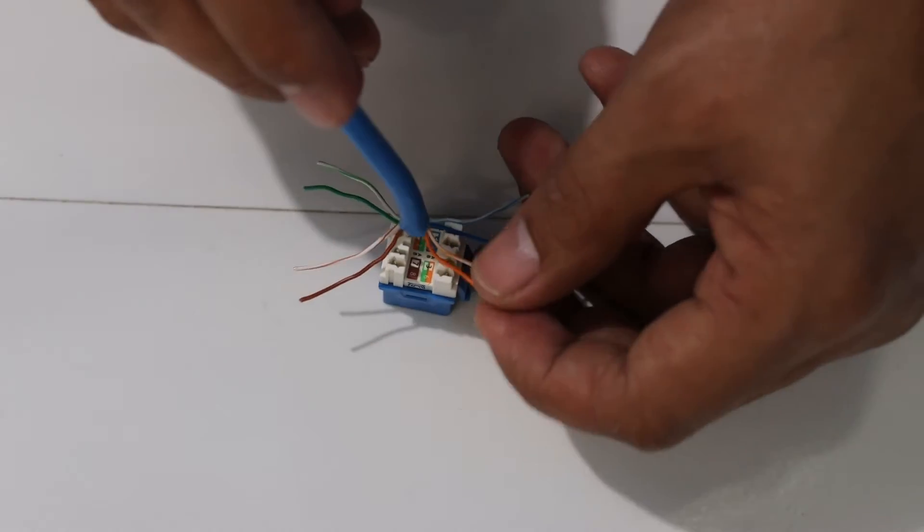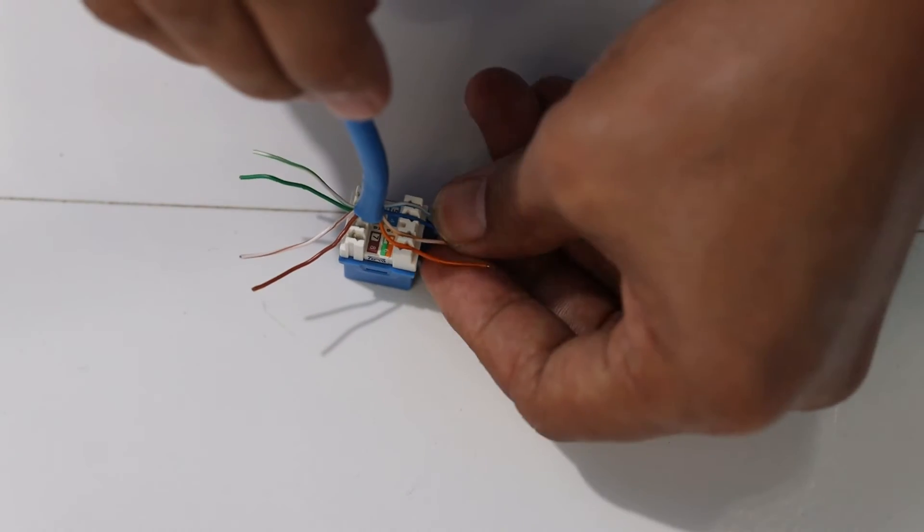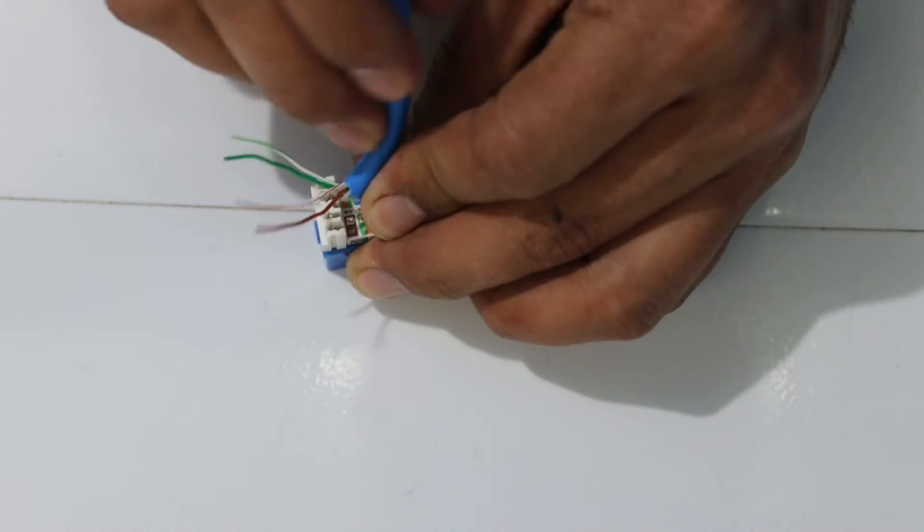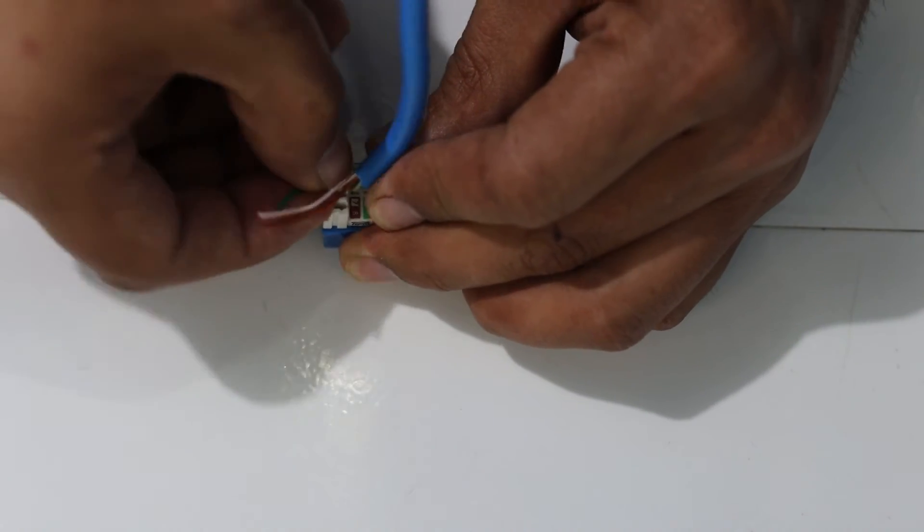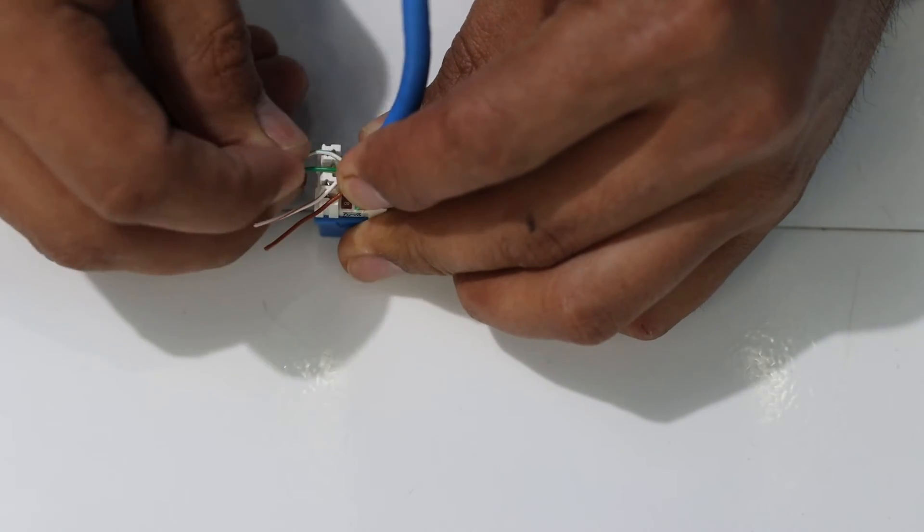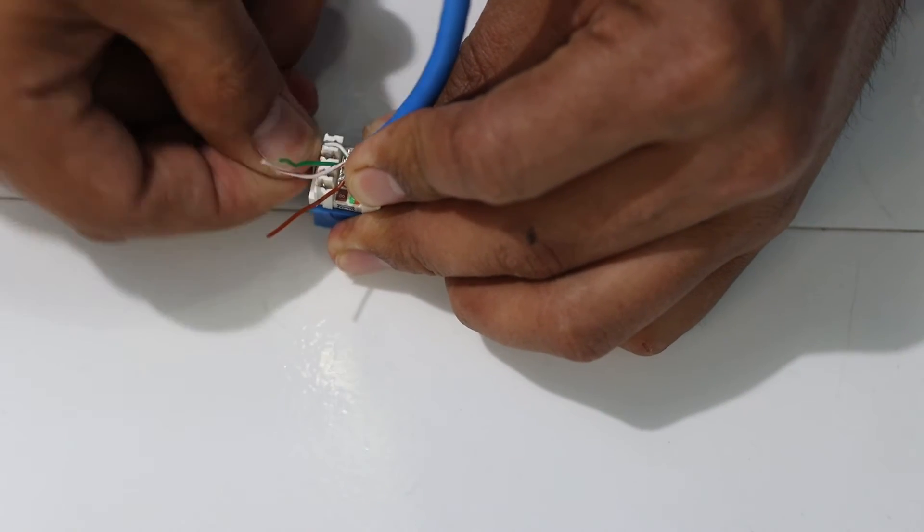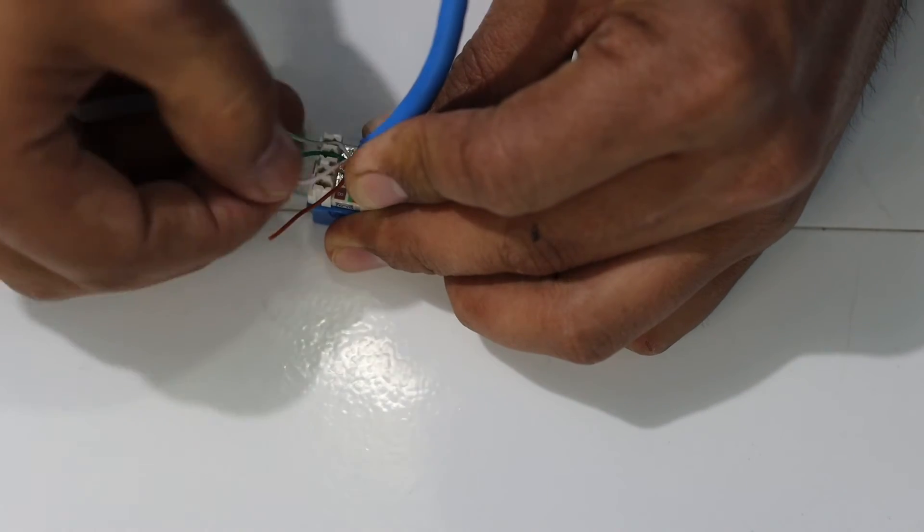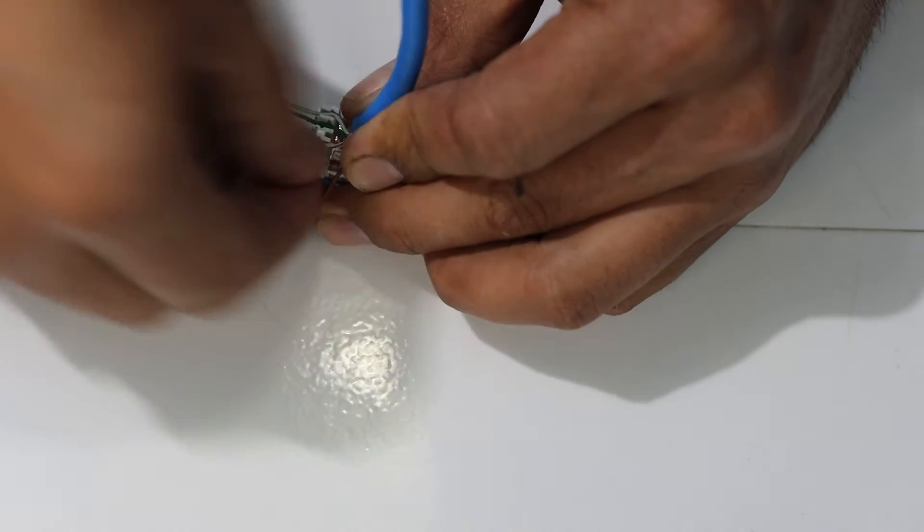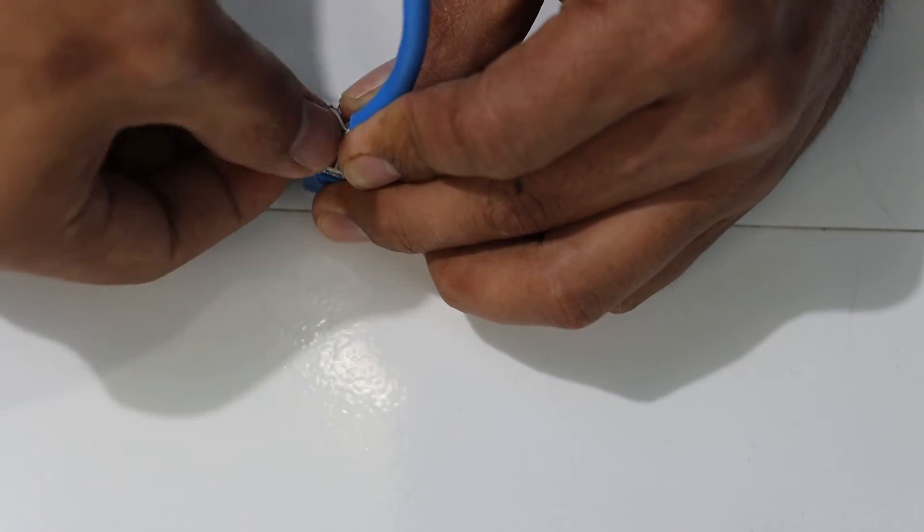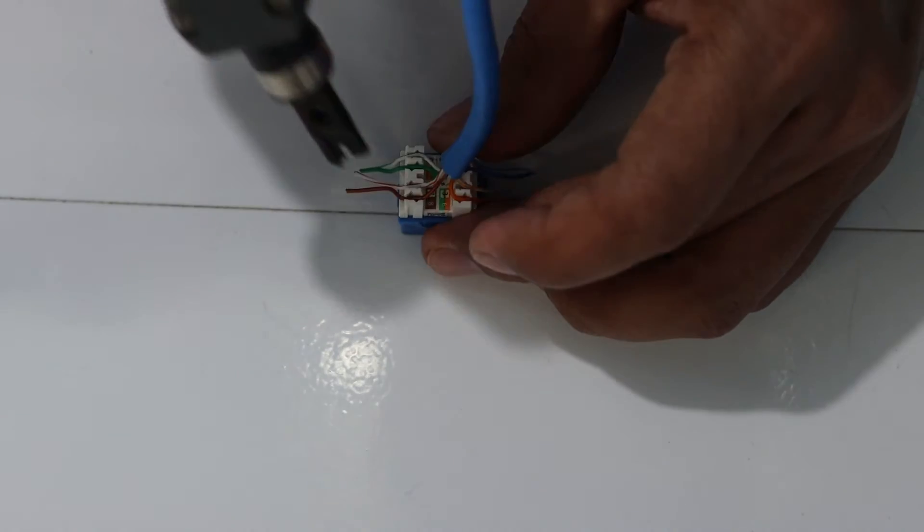Okay position it like that then we have white, orange then we have the white, brown, brown. Orange, white, brown, brown. Okay so I want to fix that one first so that it's going to be easily punched.